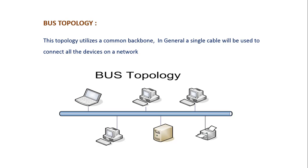Bus topology makes use of a backbone, which is a cable wire. As seen in the diagram, all the devices in the network make use of a single cable to communicate with each other. The main disadvantage of this topology is if the backbone goes down, the entire network will go down.